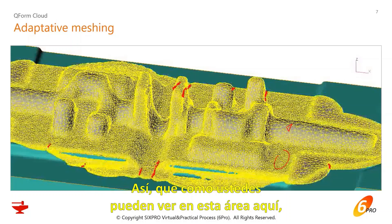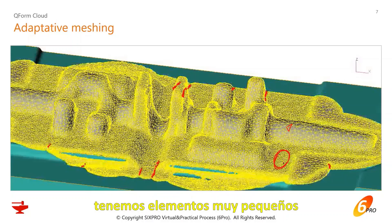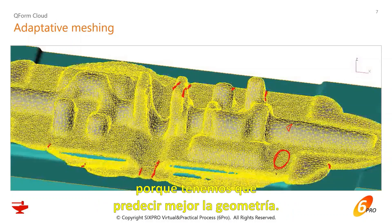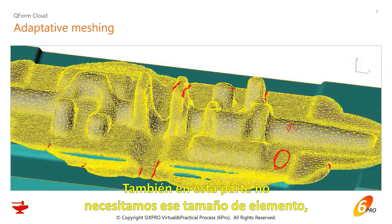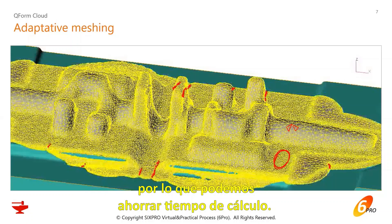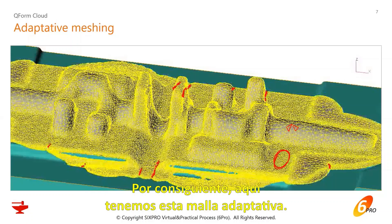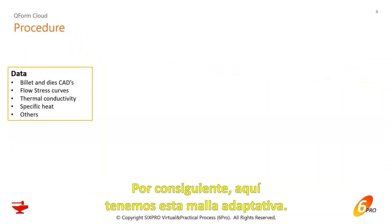As you can see at this point, in this area we have very small elements because we need to better predict the geometry. Also in other parts, we don't need that element size, so you can save calculation time. This is adaptive meshing.